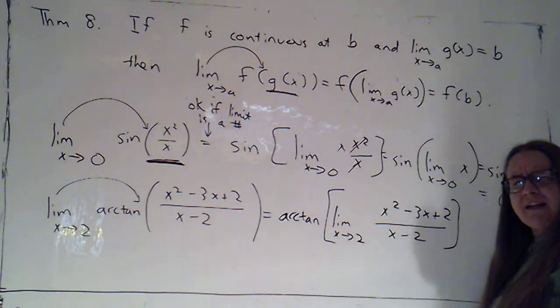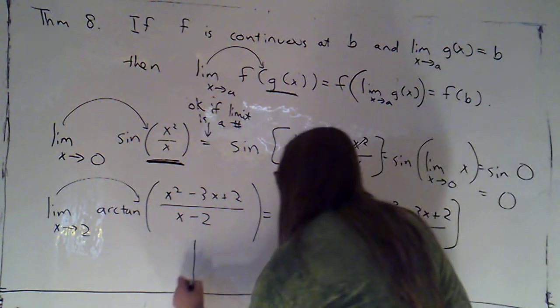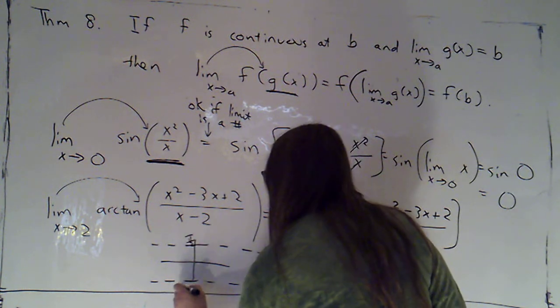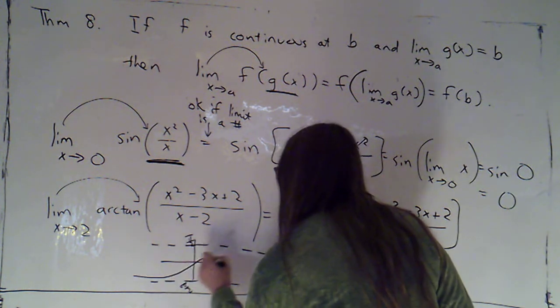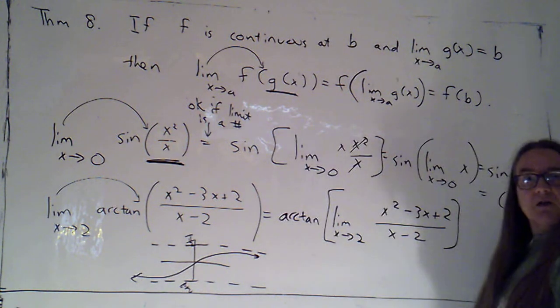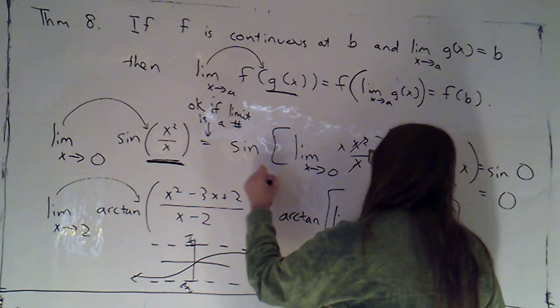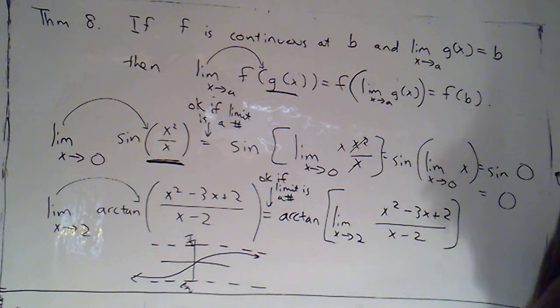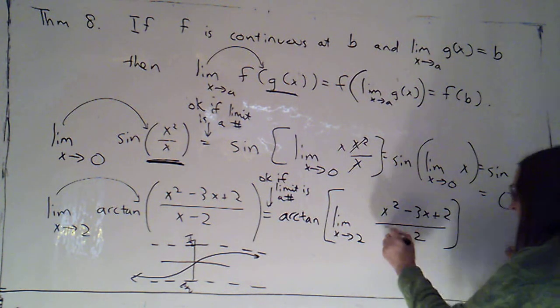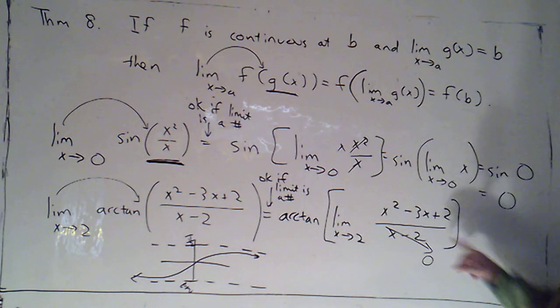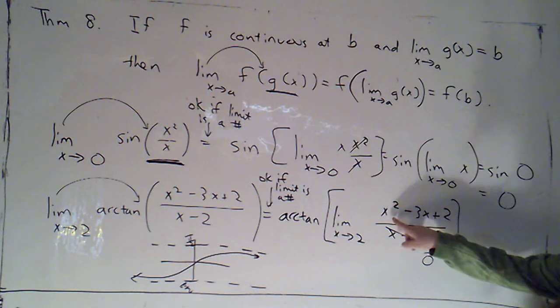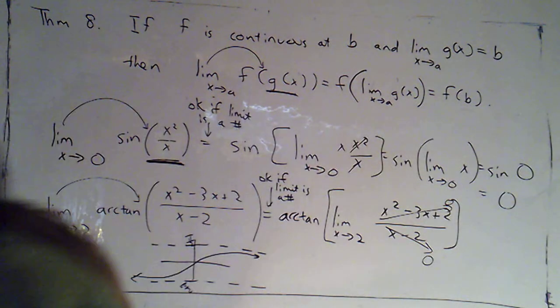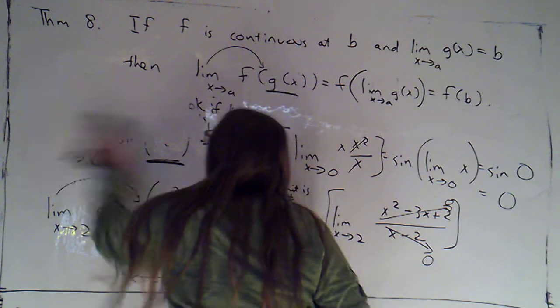Again, the domain of arctan is actually all real numbers. Because remember what arctan looks like. We've got horizontal asymptotes at pi over 2 and negative pi over 2. And it just climbs in between those asymptotes. So this is also okay if the limit is a number. So we'll hope that it is. But now I said I can't plug in 2 because it would make the bottom go to zero. Does it make the top go to zero? 4 minus 6 plus 2? Yes, it does. So we've got an indeterminate form here where top and bottom both go to zero.